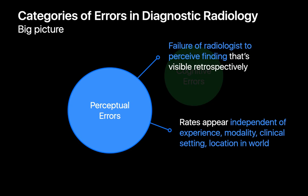Perceptual errors happen when a radiologist fails to see a finding that turns out to be visible in retrospect. Interestingly, perceptual error rates appear to be independent of whether you're a resident or tenured attending, whether you're reading x-ray or MRI, whether you're reading trauma bay or oncology, or whether you're reading in the United States or anywhere else in the world.